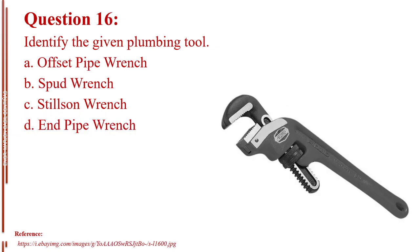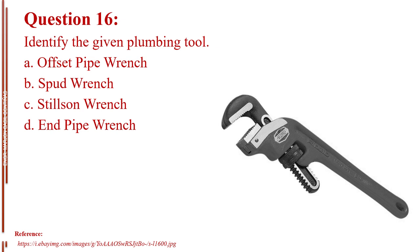Question number sixteen. Identify the given plumbing tool. Letter A, offset pipe wrench. Letter B, spud wrench. Letter C, stilson wrench. Letter D, end pipe wrench. The answer is Letter D, end pipe wrench.